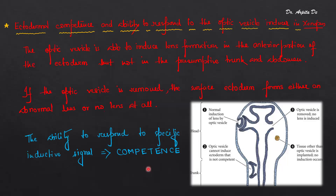Now coming to our main topic today: ectodermal competence and ability to respond to the optic vesicle inducer in Xenopus. Here we will study this process of eye lens induction in Xenopus, that is in an amphibian. The optic vesicle is able to induce lens formation in the anterior portion of the ectoderm, but not in the presumptive trunk and abdomen. The optic vesicle is only able to induce lens formation in the anterior portion of the ectoderm, not elsewhere.